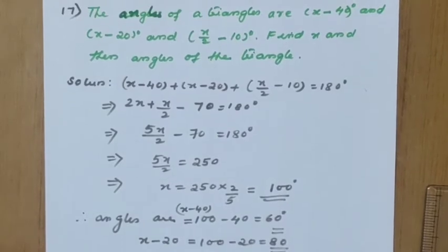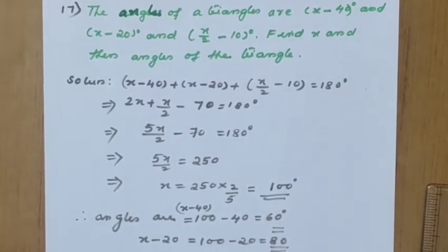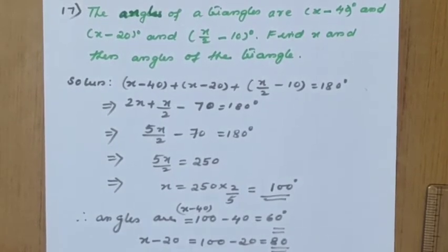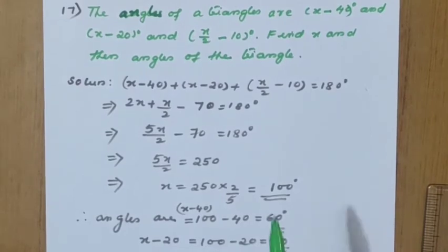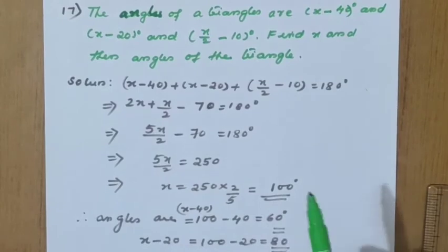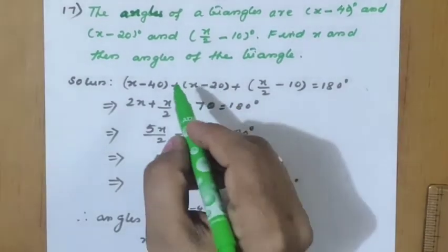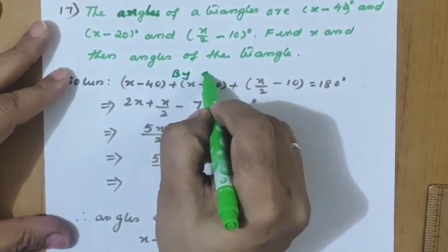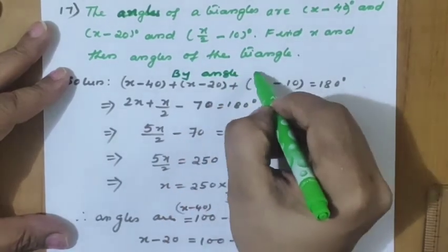Question 17: the angles of a triangle are (x − 40)°, (x − 20)°, and (x/2 − 10)°. Find x and then find each angle. We know the angle sum property of a triangle, so we write: by angle sum property of the triangle.